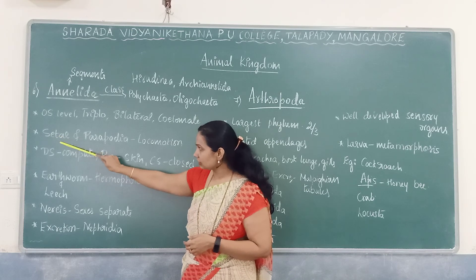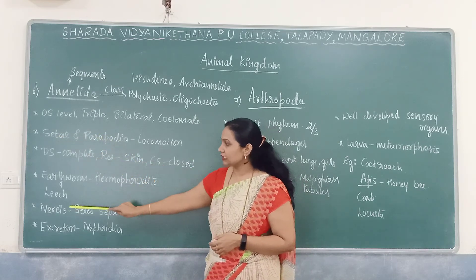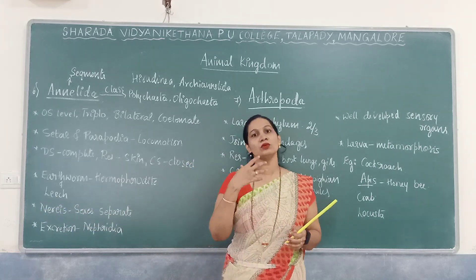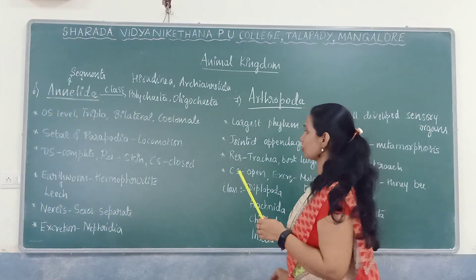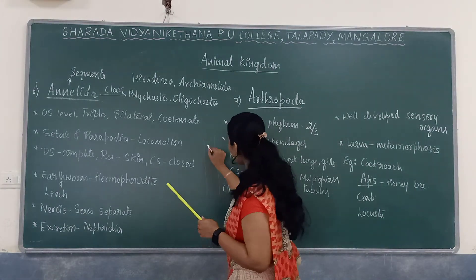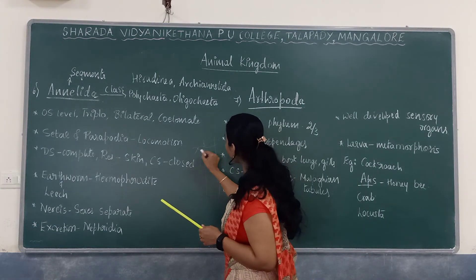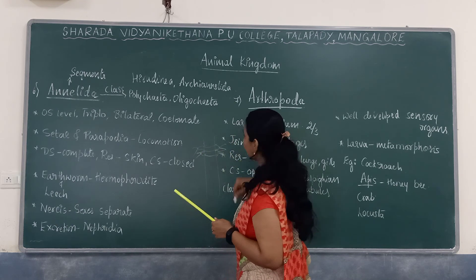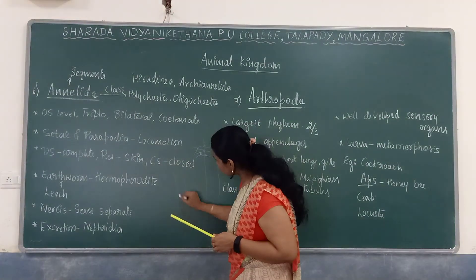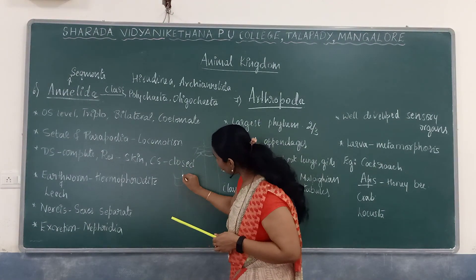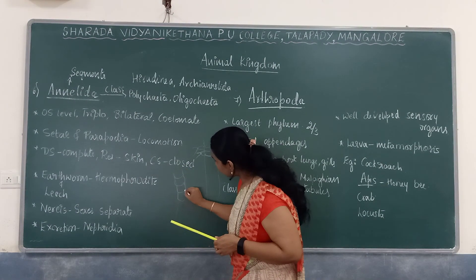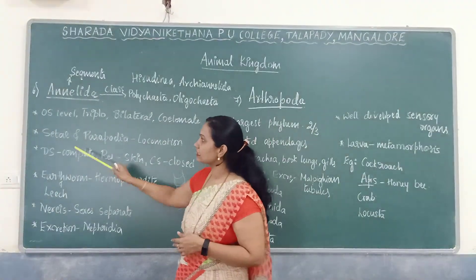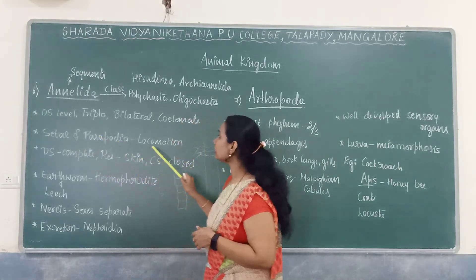For locomotion, Annelida use setae in the earthworm and parapodia in Nereis. Nereis is an aquatic annelid having parapodia-like structures. In earthworm, each segment has a seta-like structure known as setae, which helps in locomotion.